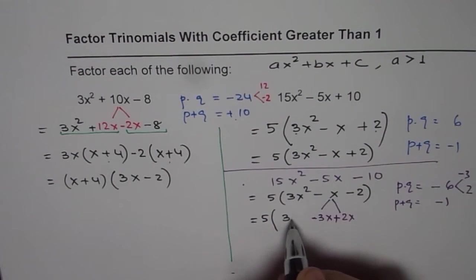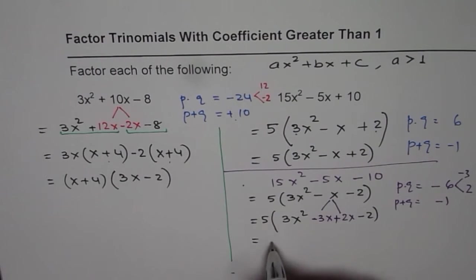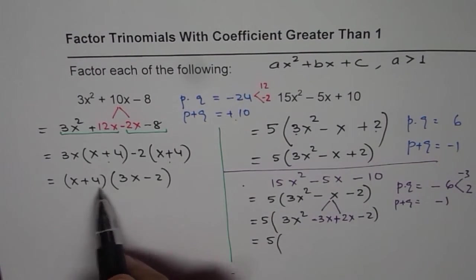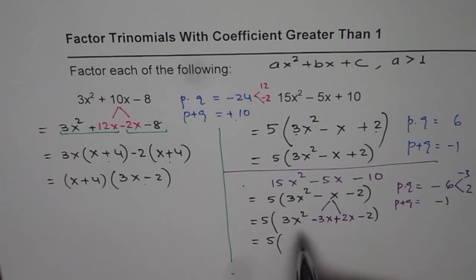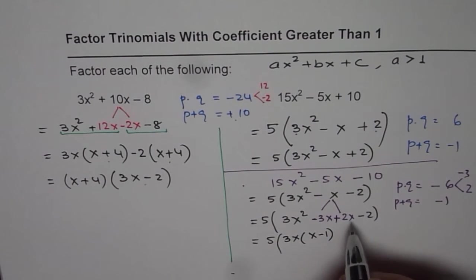So we have 3x² here, -2. Let's continue with factoring. So as we did here we will combine these two terms. 3x is common. We will write 3x. We are left with x - 1.